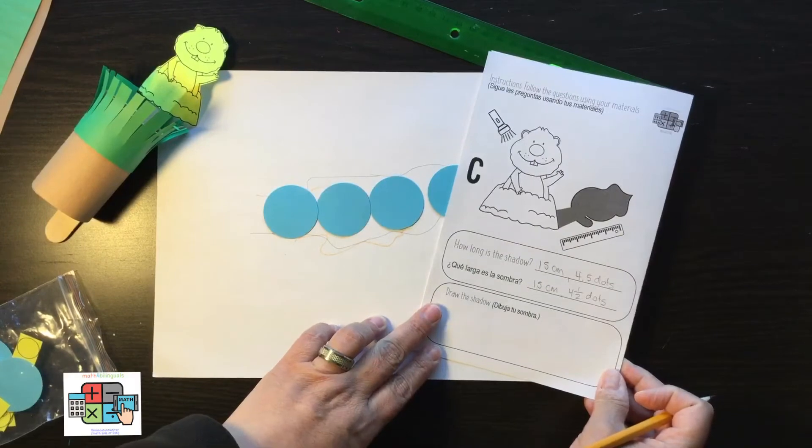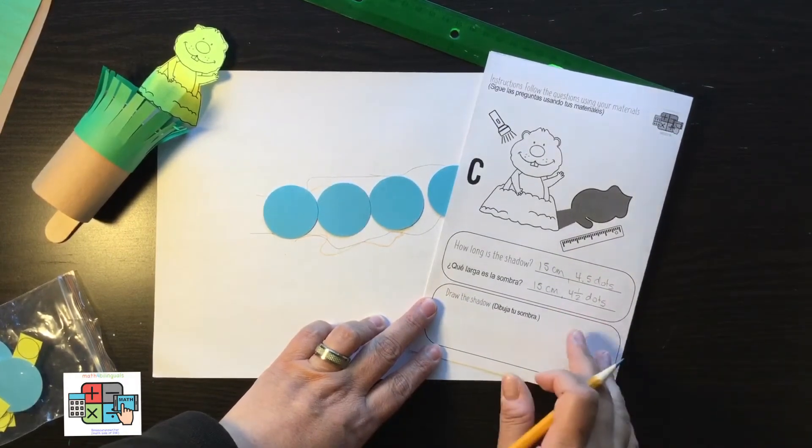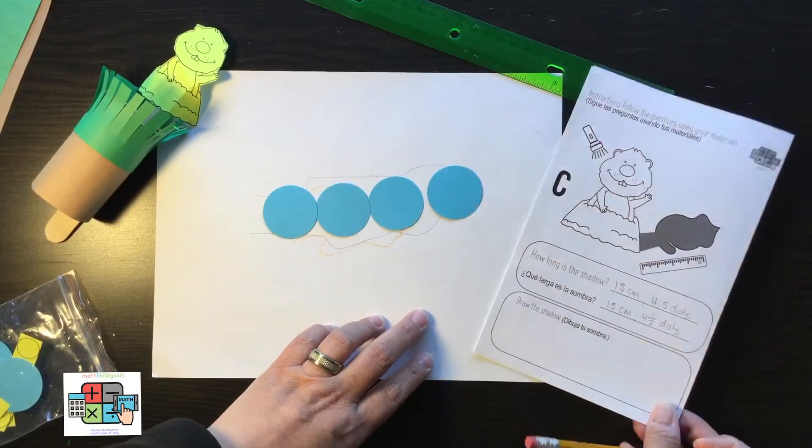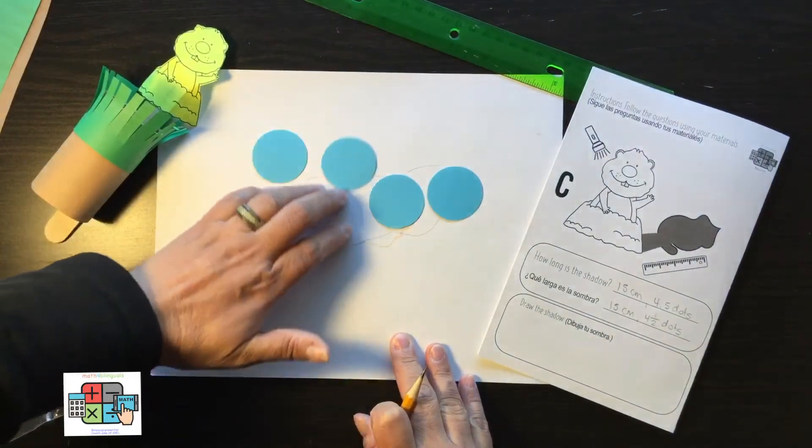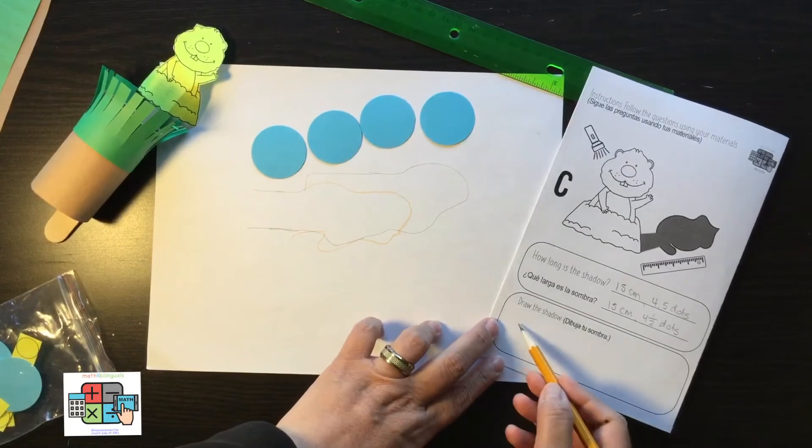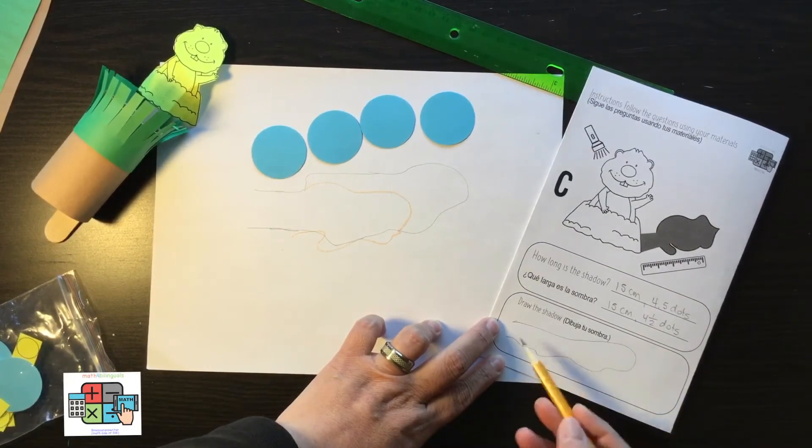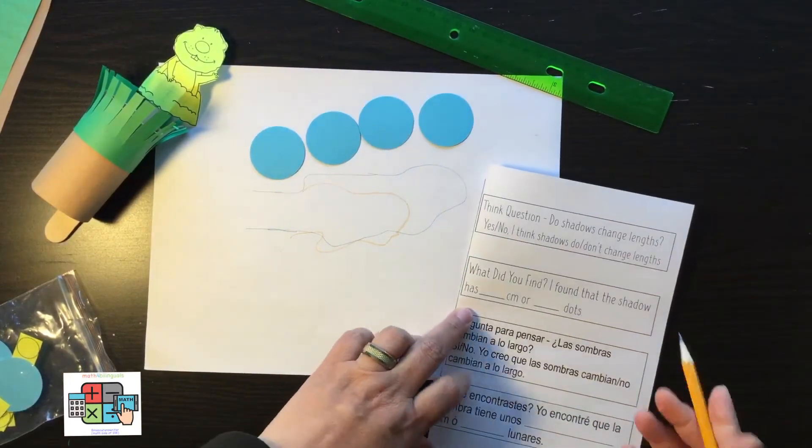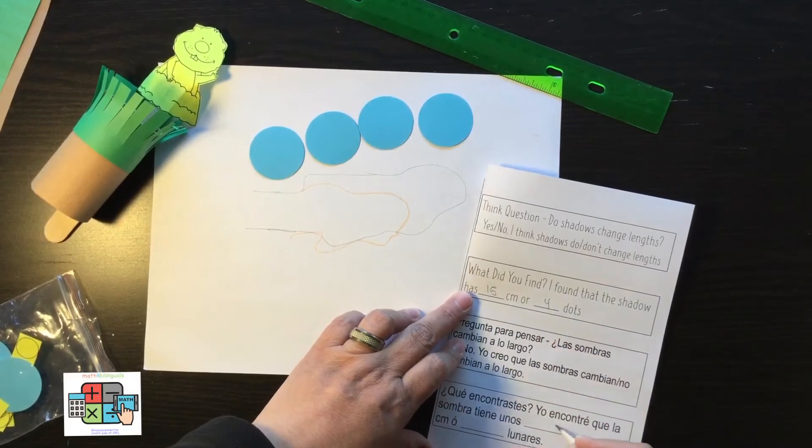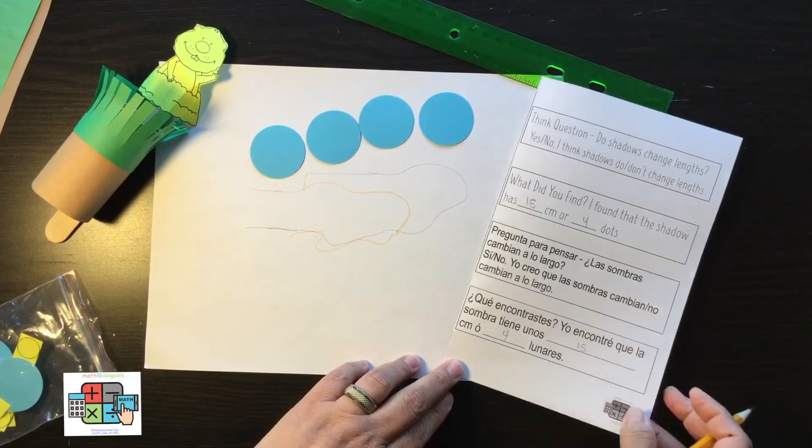If you're working with preschoolers or young learners, just keep it at four dots. For older kids, you could keep it as a fraction. What is that sketch of your shadow? You can just draw a very simple shadow and even color it in. Then you can write: 15 centimeters and four dots. Cuatro lunares, 15 y 4.